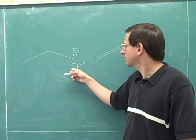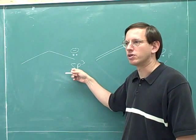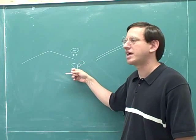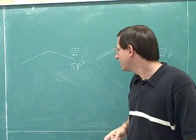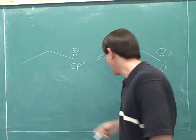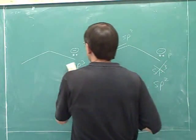So why doesn't this carbon want to be sp2 hybridized? And the reason is that that still wouldn't allow it to be conjugated. It wouldn't do it any good. Even if this were sp2 hybridized, let's just imagine it's sp2 hybridized for a second.